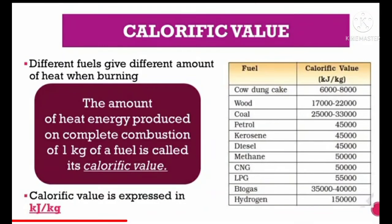Different fuels have different amounts of energy. For example, some fuels like cow dung liberate very low amounts of energy, while fuels like LPG liberate very high amounts of energy. To distinguish between them we use fuel efficiency, which is determined by calorific value. The amount of heat energy produced on complete combustion of one kilogram of a fuel is called its calorific value, expressed in kilojoule per kilogram.